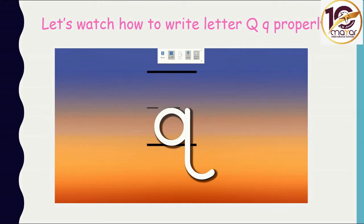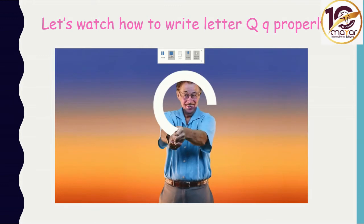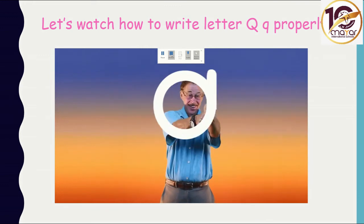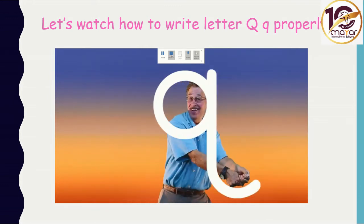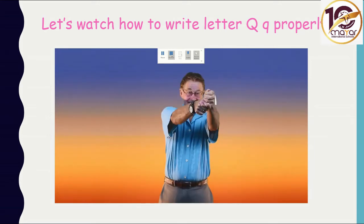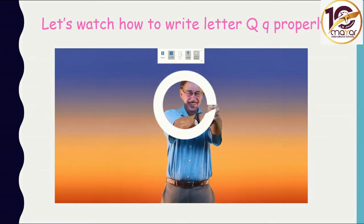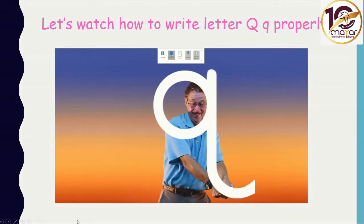Now, the small q — we write it between two lines. Half circle, up and down. We go below the line. Don't forget the tail. The tail is below the line. Again, half circle, up and down. Don't forget the tail below the line.